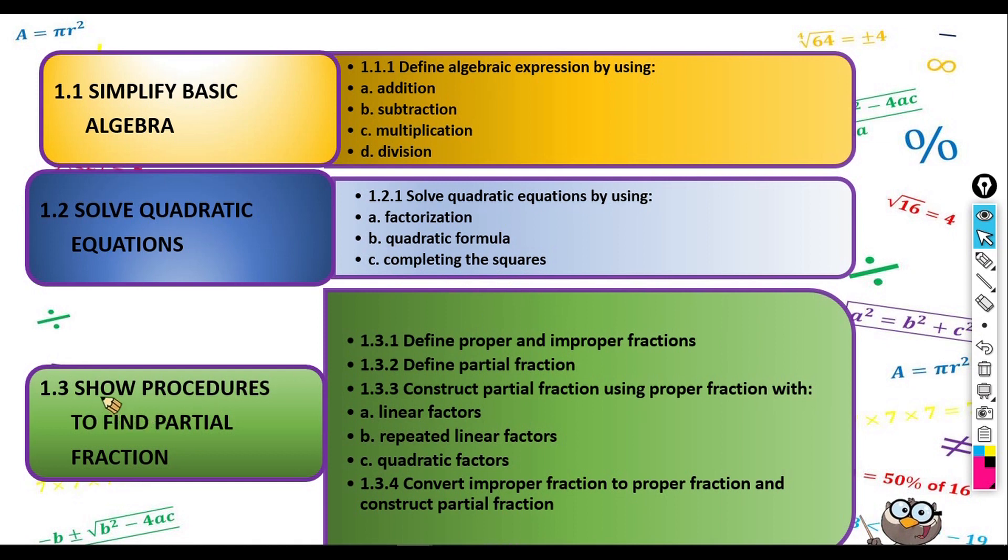And the last subtopic is Show Procedures to Find a Partial Fraction. Number 1 is Define Proper and Improper Fractions. Next one is Define Partial Fraction. Construct Partial Fraction using Proper Fraction with Linear Factors, Repeated Linear Factors, Quadratic Factors. And the last one is Convert Improper Fraction to Proper Fraction and Construct the Partial Fraction.